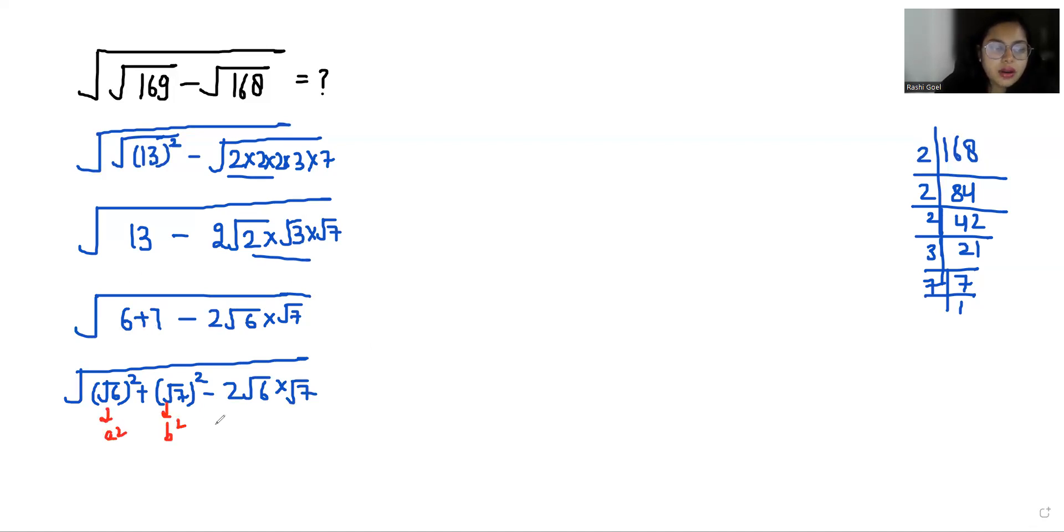So it is the formula of a minus b whole square. So a is root 6 minus root 7 whole square.